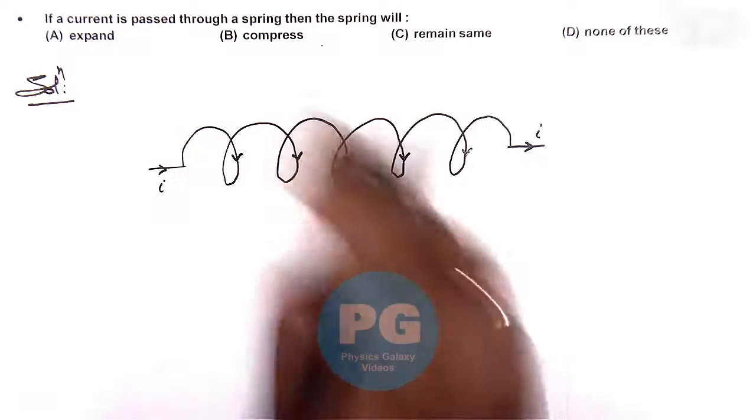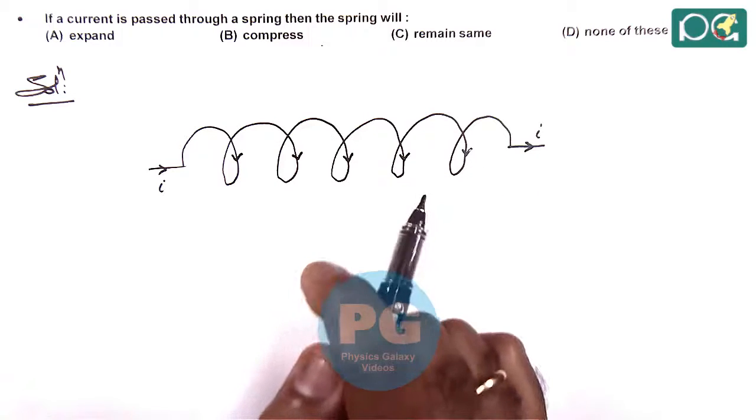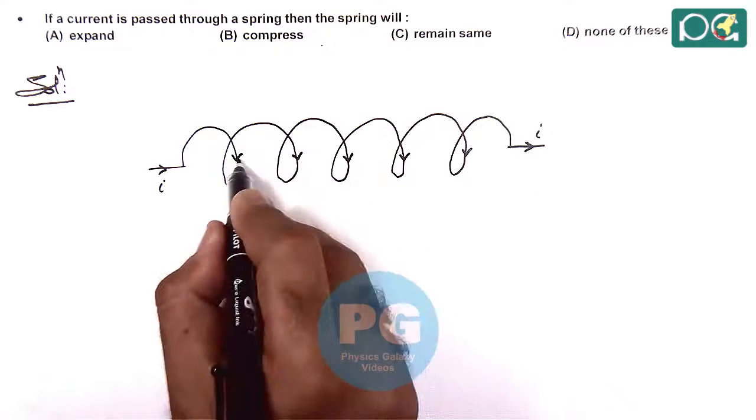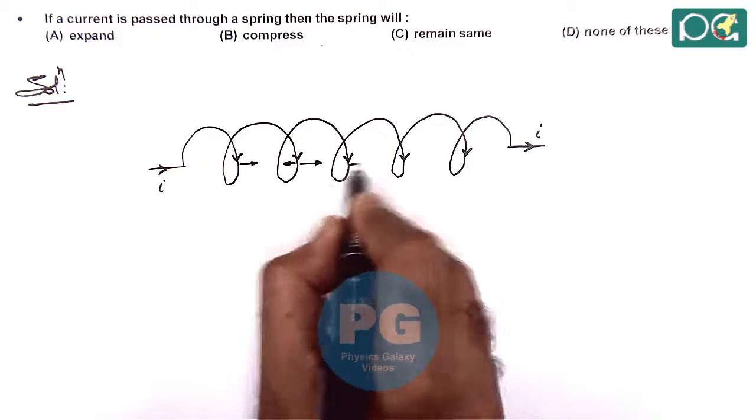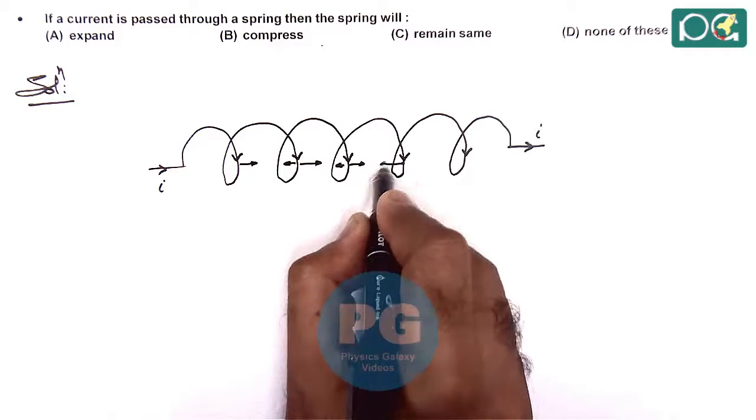The current will be flowing in the turns parallel to each other. So due to parallel currents we can say the turns will attract each other in all directions.